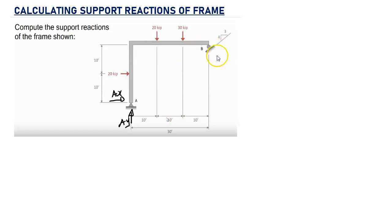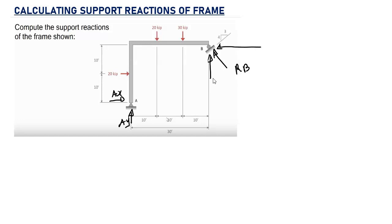At point B we have an inclined roller support, so we are going to have an inclined support reaction ROB. We assume this reaction acts upward. Whenever we have an inclined force we need to decompose it into its vertical and horizontal components, so we have to decompose ROB into a vertical component and a horizontal component.